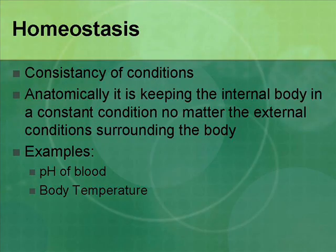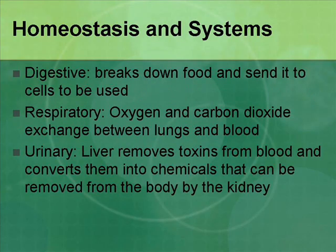Homeostasis keeps the internal body and the external body — your skin as well — in a constant condition no matter what's going on outside. For instance, body temperature is a great example: if it's 100 degrees outside, your body temperature is going to be roughly 98.6 degrees. If it's 10 degrees outside, your body temperature is still going to be roughly 98.6 degrees. It's keeping that balance no matter what's happening externally.